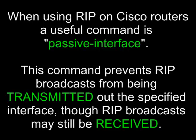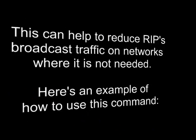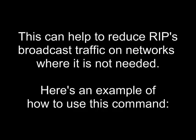When using RIP on Cisco routers, a useful command is passive-interface. This command prevents RIP broadcasts from being transmitted out the specified interface, though the RIP broadcast may still be received. This can help to reduce RIP's broadcast traffic on networks where it is not needed.